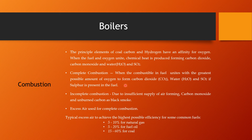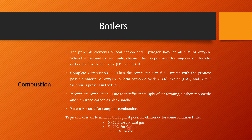In complete combustion, there won't be any carbon monoxide or black smoke — the combustion is complete. In incomplete combustion, due to insufficient supply of air, carbon monoxide and unburnt carbon form as black smoke with the flue gas. Excess air is used for complete combustion. Typical excess air to achieve the highest possible efficiency: for natural gas it is 5–10%; for fuel oil used in a boiler burner it is 5–20%; for coal used in a furnace it will be 15–16%.